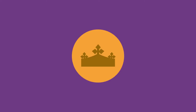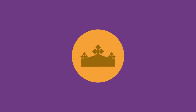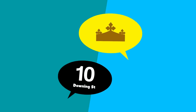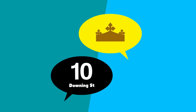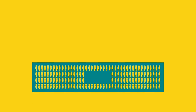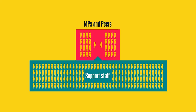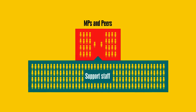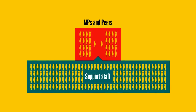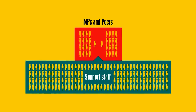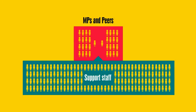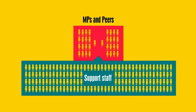The monarch's role is mainly ceremonial. They meet the Prime Minister once a week to hear what's going on in Parliament, and formally agree every new law. But that's not all. There are also people working behind the scenes who support the work of Parliament: clerks, librarians, researchers, and many more.